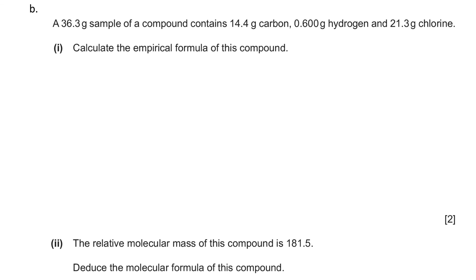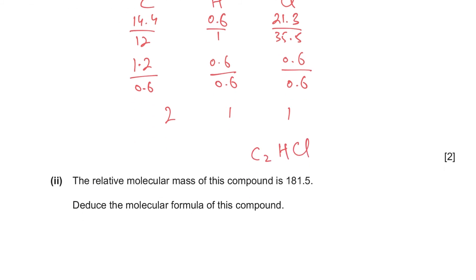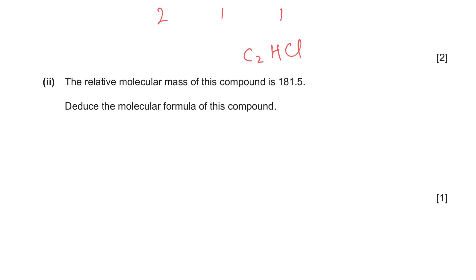A 36.3-gram sample contains 14.4 g carbon, 0.6 g hydrogen, and 21.3 g chlorine. Dividing by their Ar values (12, 1, 35.5) gives moles of 1.2, 0.6, and 0.6. Dividing by the smallest gives a mole ratio of 2:1:1, so the empirical formula is C2HCl.